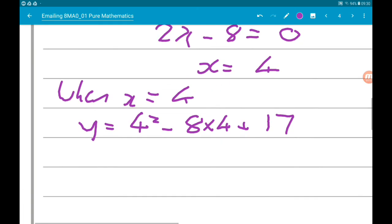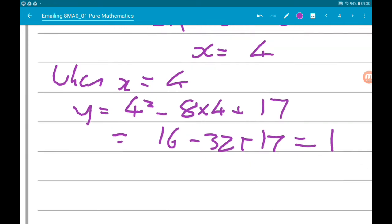Now, we get 16 minus 32, plus 17, which again gives us 1. So the minimum value of y is 1. So again, the function is always positive.